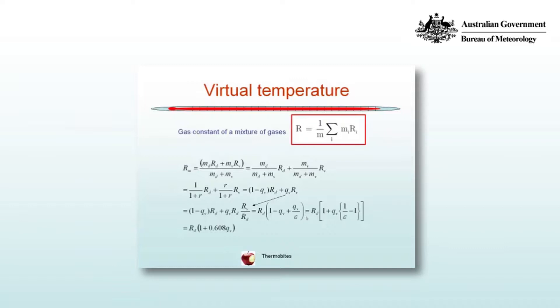And so we can take out a common factor RD, which is the middle term, and it's RD multiplied by a term inside the brackets that involves the specific humidity. And the last term on that line is just another rearrangement, nothing new.